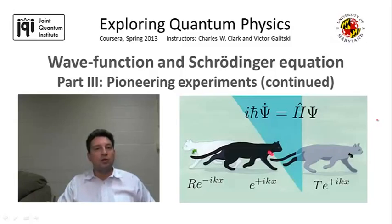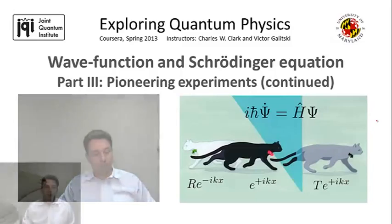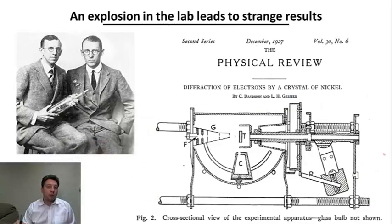But it was actually serendipity that plays such an important role in physics sometimes that produced the clearest experimental results that confirmed de Broglie's hypothesis and put a nail in the coffin of classical physics. So let me tell you about this experiment and actually a rather curious story behind it.